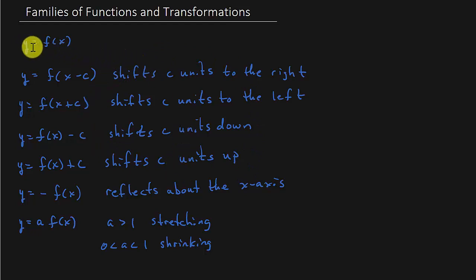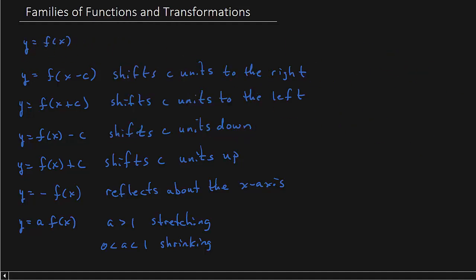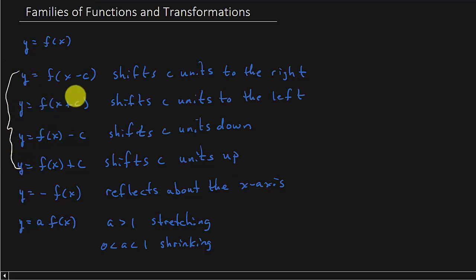So if we just have a function y equals f of x, then if we have y equals f of x minus c, that shifts the graph c units to the right. If we have f of x plus c, that shifts the graph c units to the left. f of x minus c shifts it c units down. f of x plus c shifts c units up. Notice the difference — when the c is inside the parentheses, that moves it left and right. When it's outside the parentheses, that moves it up and down.